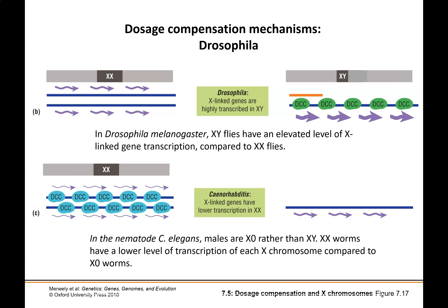In C. elegans (Caenorhabditis, our nematode), we get the opposite. Instead of overexpressing that single chromosome, they actually decrease expression by the presence of transcription factors on those X chromosomes. In C. elegans, if we have one X chromosome, those genes are expressed normally. But in females, where we have two copies of the X chromosome, they actually show decreased expression — all of the genes are expressed just at lower levels.